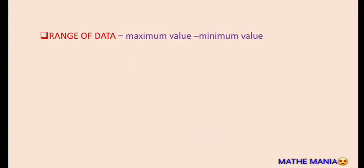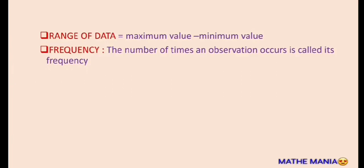We have the range of the data. The data which we collect is in the form of numbers, and each number is called an observation. To find the range, we have to find out the minimum and maximum values of observations — their difference gives us the range.